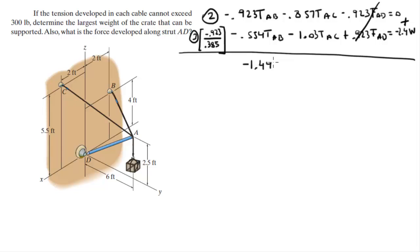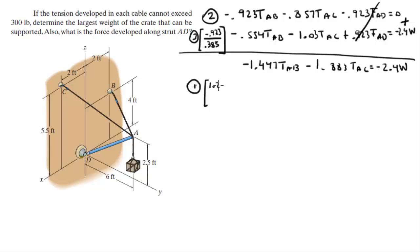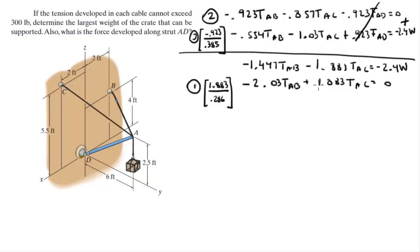The combined equation is: -1.447 T_AB - 1.883 T_AC = -2.4W. Next, multiply Equation 1 by (1.883 / 0.286), giving: -0.203 T_AB + 1.883 T_AC = 0. Adding these two equations cancels T_AC, and we get: -3.5 T_AB = -2.4W, so T_AB = 0.686W.